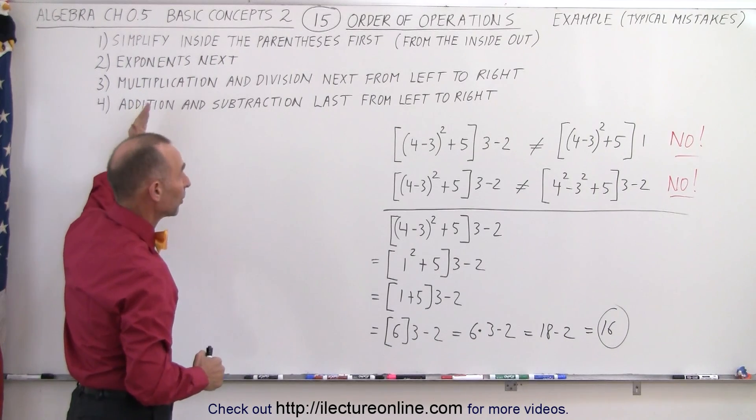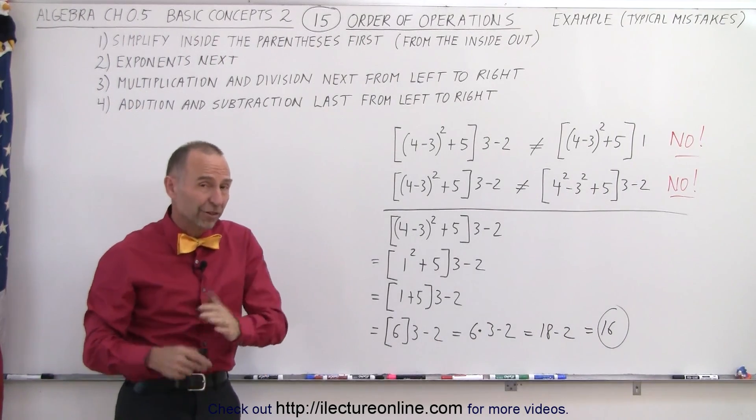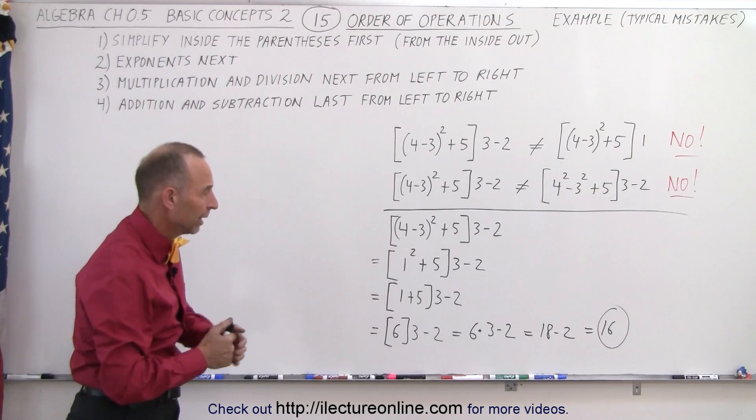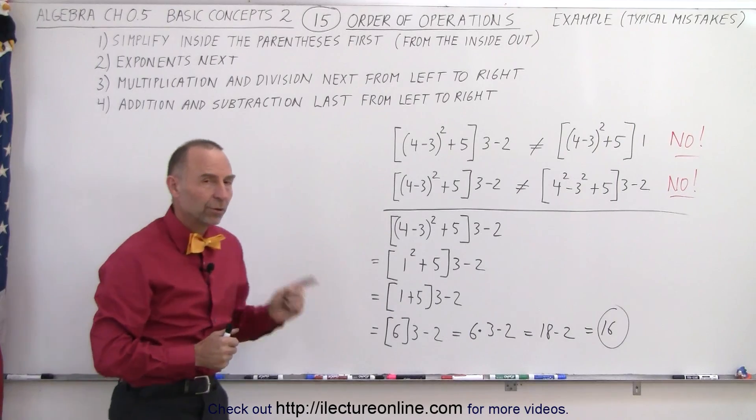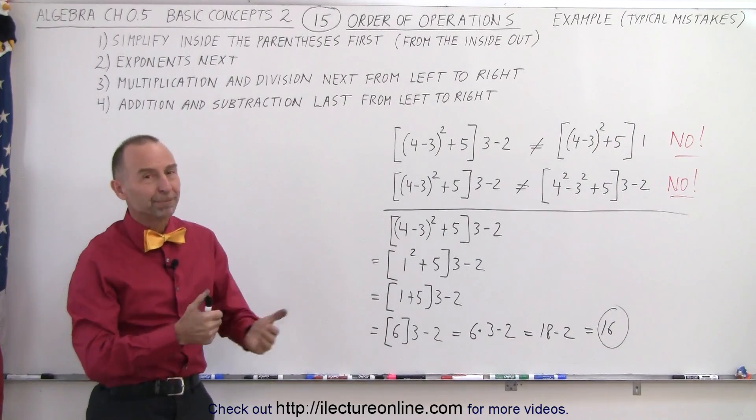Exponents first, then multiplication and division (they have equal priority), then addition and subtraction. When you follow those rules, you will come up with the right answer. And that's how it's done.